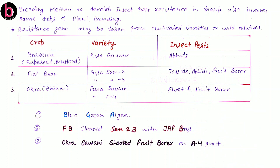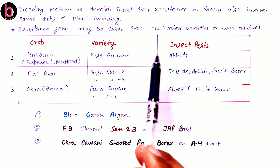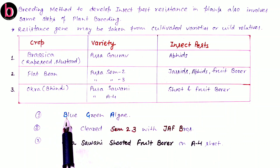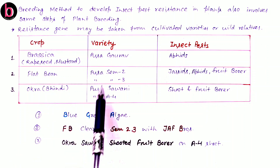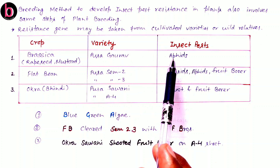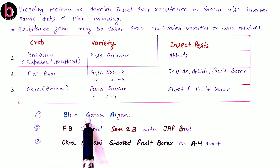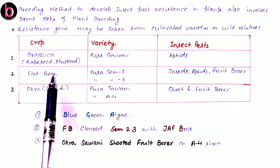Now for memory tricks for these three varieties. The first trick for Brassica uses the acronym BGA — similar to blue-green algae (cyanobacteria). B is for Brassica, G is for Gaurav, and A is for aphids. Pusa is common to all varieties so no need to memorize it separately. So: B for Brassica, G for Gaurav, A for aphids.